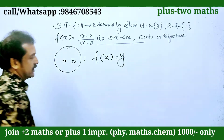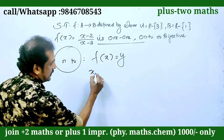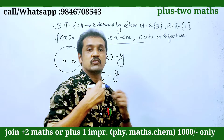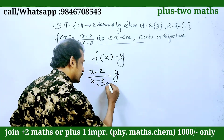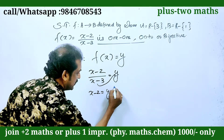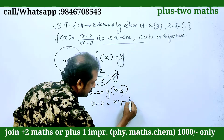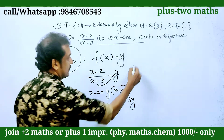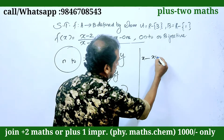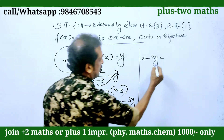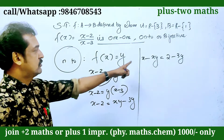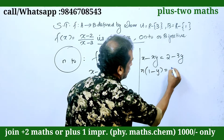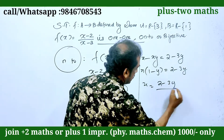F of x equal to y. That is x minus 2 divided by x minus 3 equal to y. That is x minus 2 equal to y into x minus 3, which becomes x minus 2 equal to xy minus 3y. Bring x terms to one side: x minus xy is equal to 2 minus 3y. Then x is common from left hand side; in bracket we get 1 minus y. Right side is same: 2 minus 3y. Therefore x is equal to 2 minus 3y divided by 1 minus y.